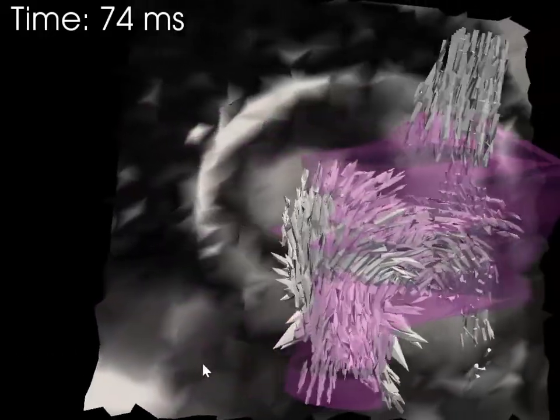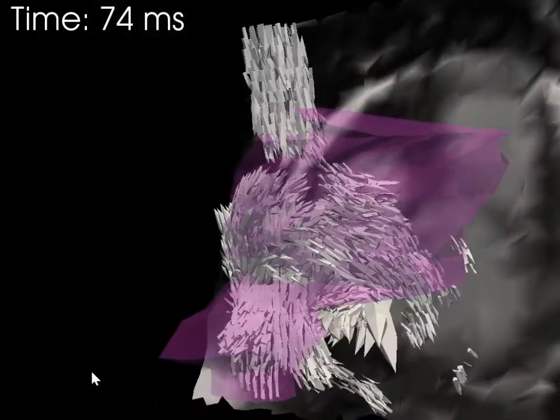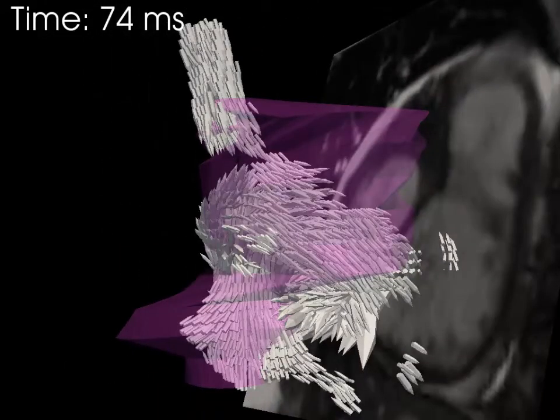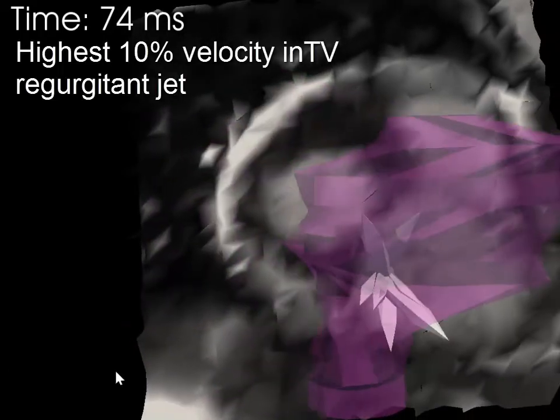Flow from the hepatic vein wraps around flow from the inferior vena cava and is joined by flow from the superior vena cava in a circular motion prescribed by the walls of the atrium.